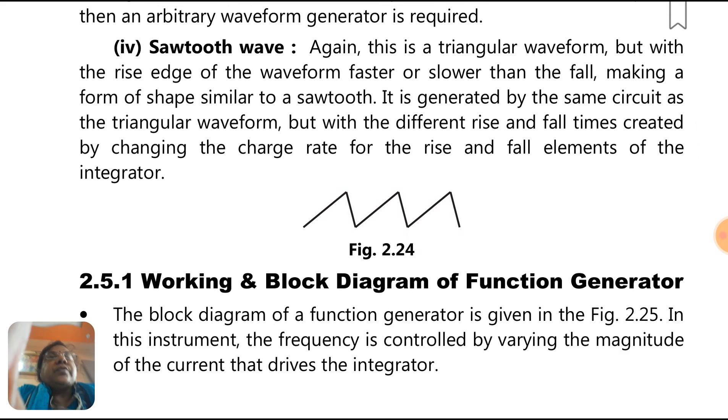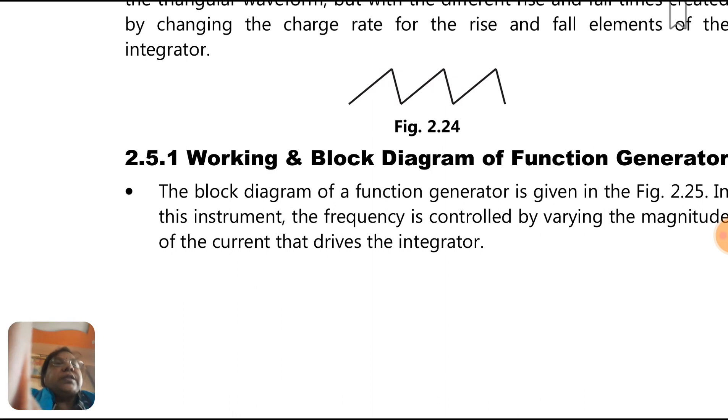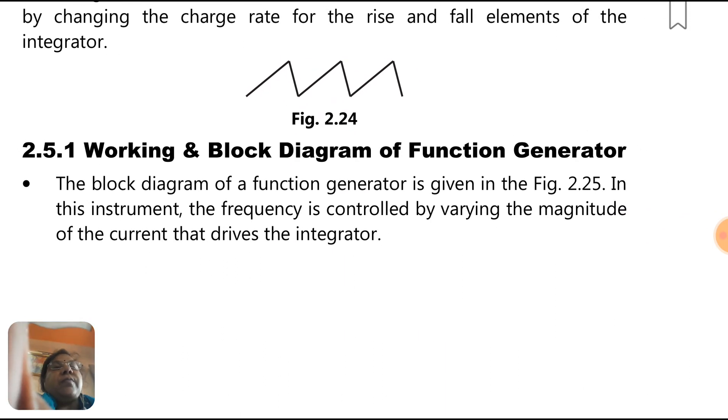Sawtooth wave: again, this is a triangular waveform but with the rise edge of waveform faster or slower than the fall, making a form of shape similar to a sawtooth. It is generated by the same circuit as a triangular waveform but with different rise and fall times, created by changing the charge rate for the rise and fall elements of the integrator. We will see working and block diagram of function generator in the next lecture.